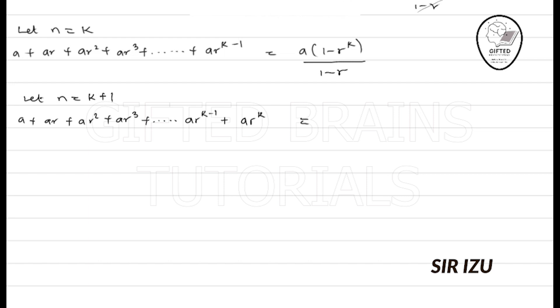And it should give us, on this right-hand side, A into 1 minus, anywhere you see that k, substitute k plus 1 there. Anywhere you see n, substitute k plus 1. And that will give us k plus 1, all over 1 minus R.